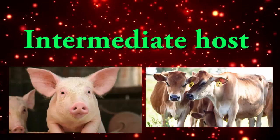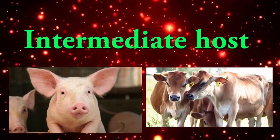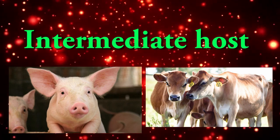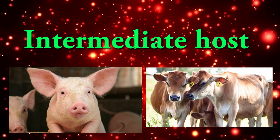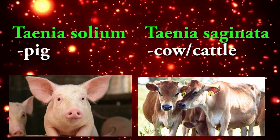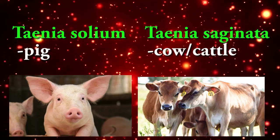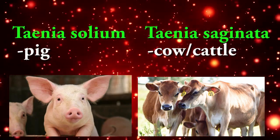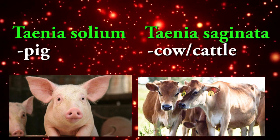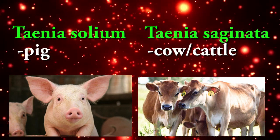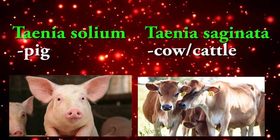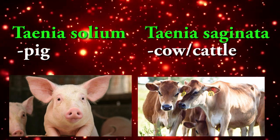Intermediate host: Taenia solium uses the pig as its intermediate host, while Taenia saginata uses cattle as its intermediate host.